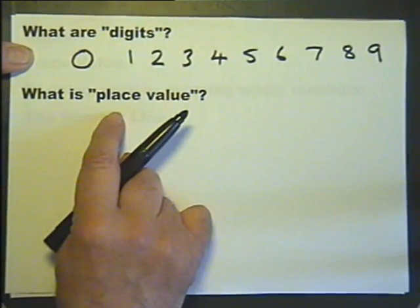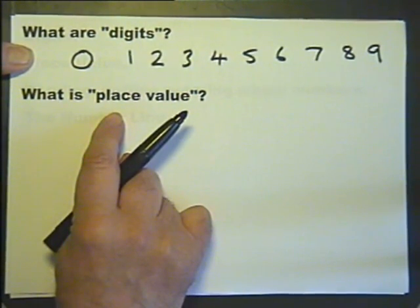Next one is place value. Each digit has a value, and its value depends on the position in the number. We call this place value.